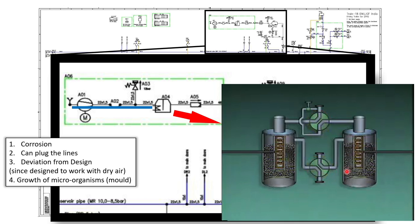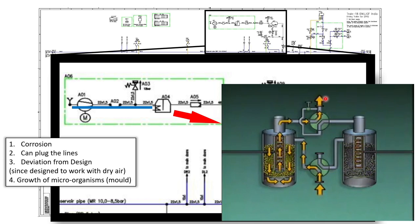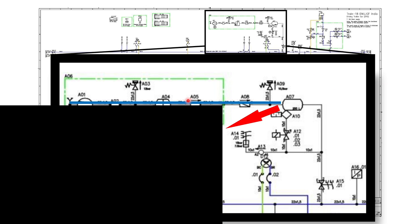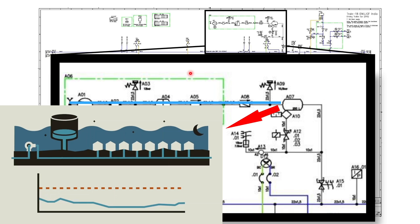We use a twin tower desiccant type air dryer. Desiccant is a material that absorbs moisture, like silica. Air comes in from the inlet, passes through the desiccant which absorbs moisture, then goes through heated coils, and exits as dry air. The reason for twin towers is that after a while one tower becomes saturated, so it switches to the other side while the heated coil dries out the first tower's desiccant.